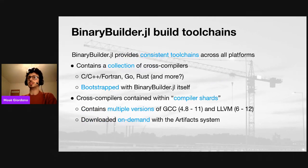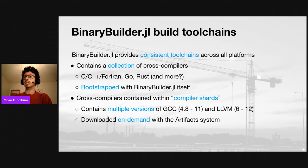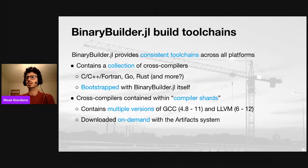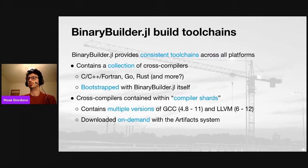In terms of toolchains, BinaryBuilder provides consistent toolchains across all platforms. We have a collection of several different cross-compilers for C, C++, Fortran, Go, and Rust, and maybe more languages in the future. There is actually a very early prototype to target WebAssembly, but Julia doesn't natively compile for WebAssembly, so this work is in the background for the moment. Most importantly, all these toolchains are bootstrapped with BinaryBuilder itself — we have a single script which can build GCC for all platforms. We only need to change the target platform each time, but we use the same script for all platforms.